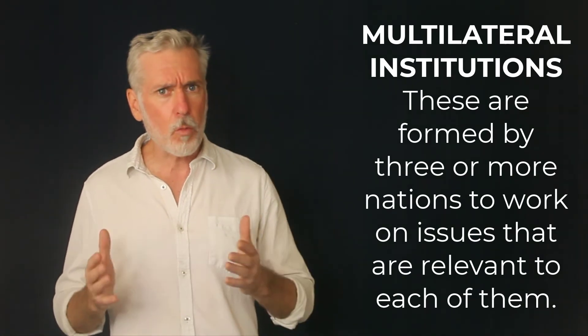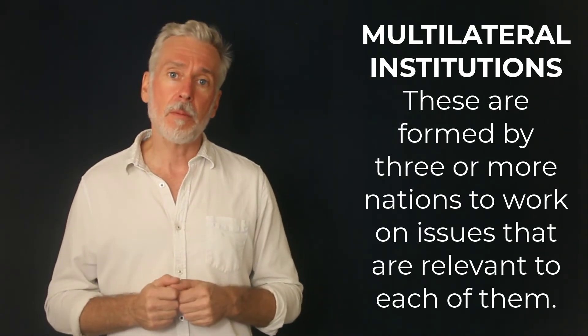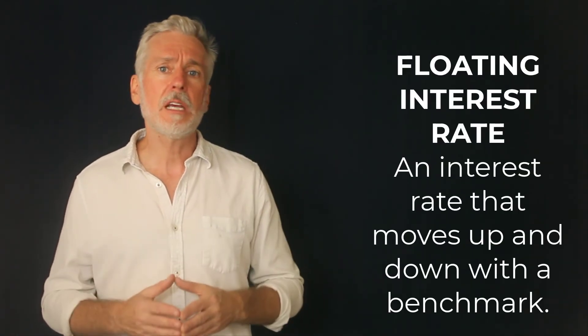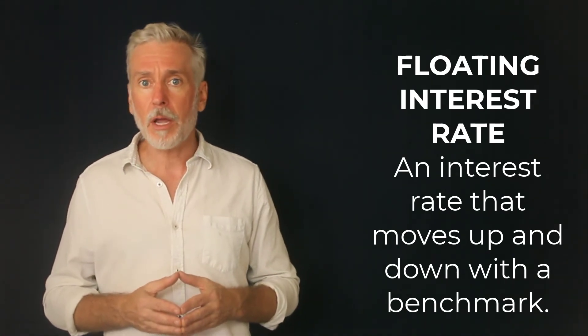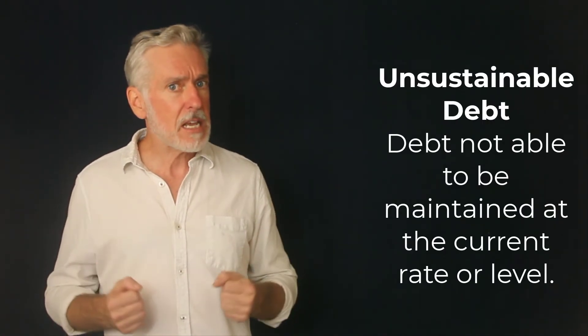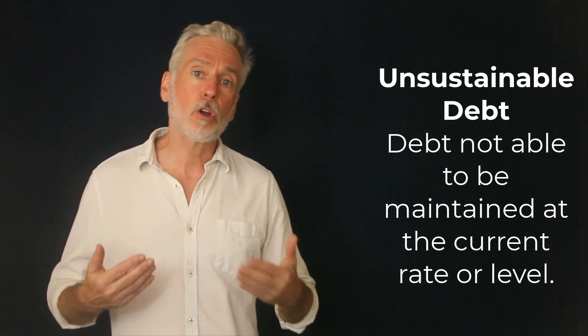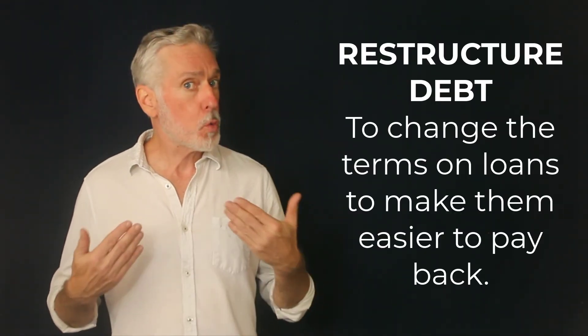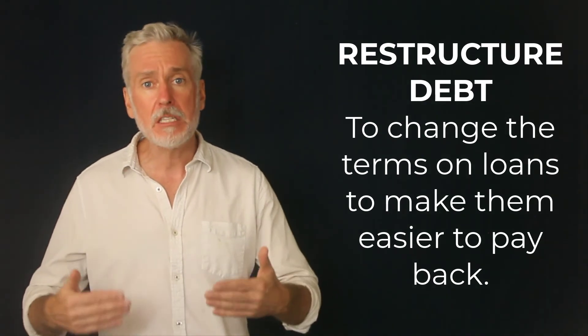Multilateral institutions. These are formed by three or more nations to work on issues that are relevant to each of them. Examples are the World Bank and the European Investment Bank, just to name a few. Floating interest rate. An interest rate that moves up and down with another benchmark rate. Unsustainable debt. Debt not able to be maintained at the current rate or level. Restructure debt. To change the terms on loans to make them easier to pay back.